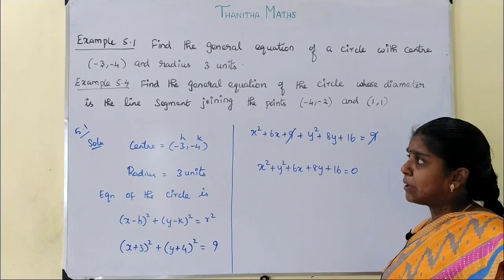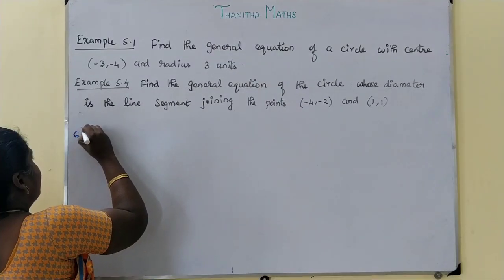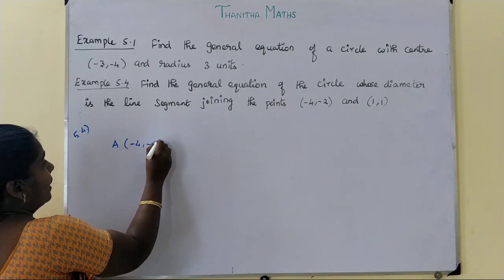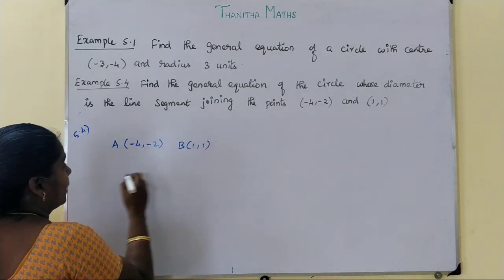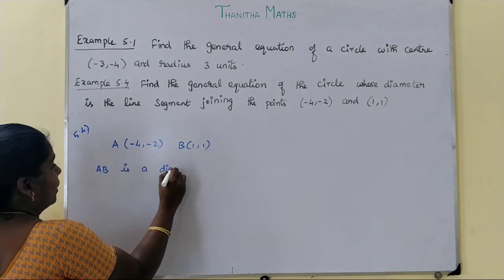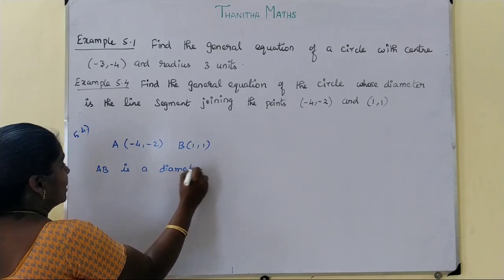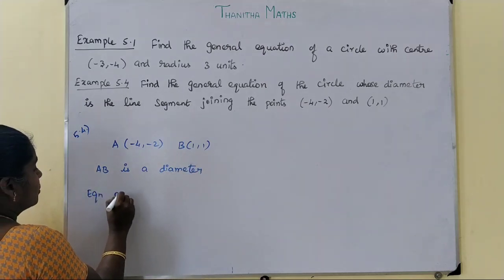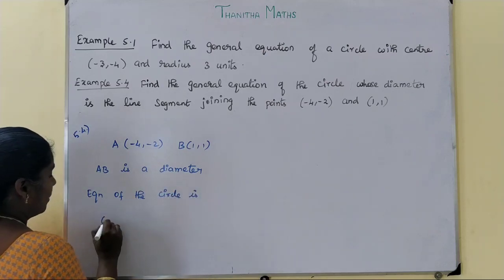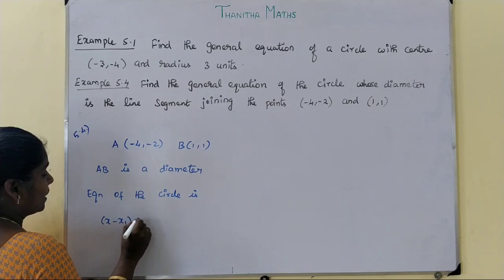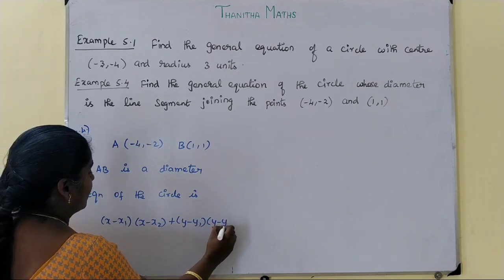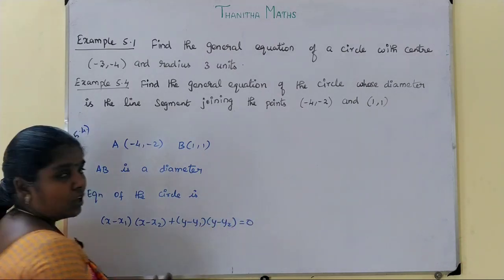Next we move on to example 5.4. When the diameter endpoints are given, the equation of the circle uses the formula: x minus x1 into x minus x2, plus y minus y1 into y minus y2, equal to 0. This is the formula.